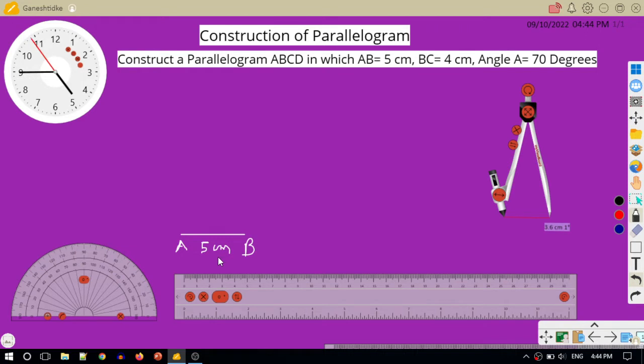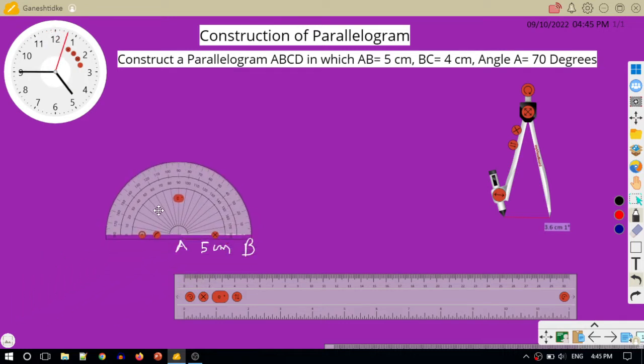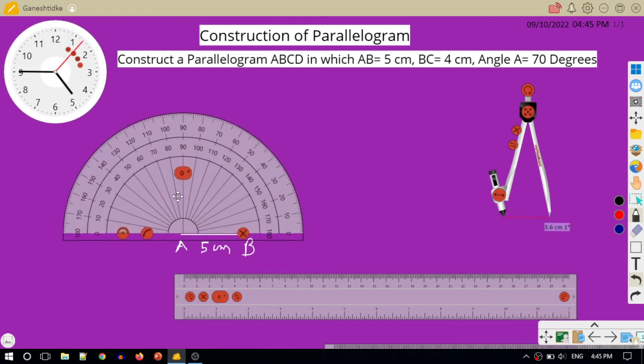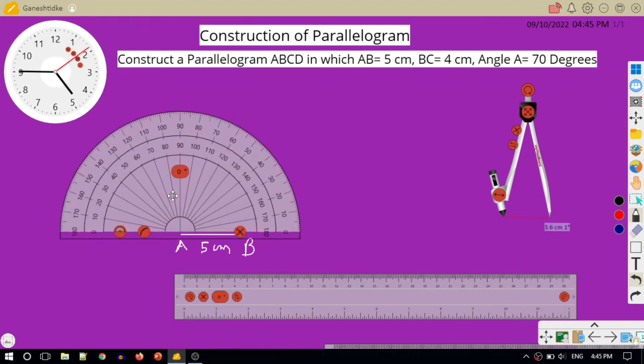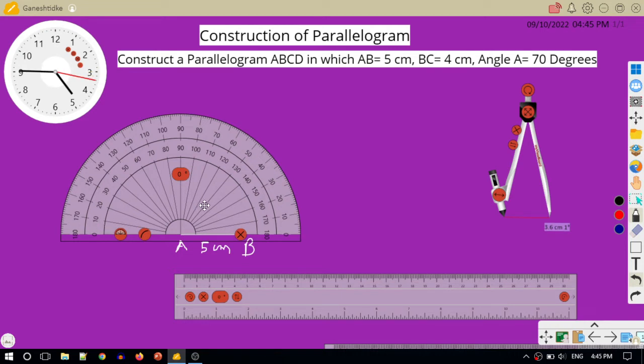So in the second step, through A draw AX. I will enlarge it so that you can view it. I will match the center with point A and the baseline of the protractor along AB, and I will measure 70 degrees.